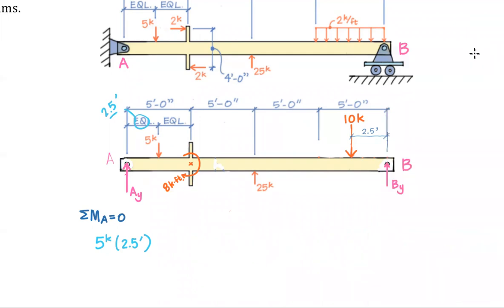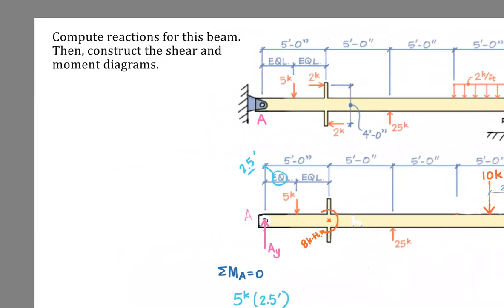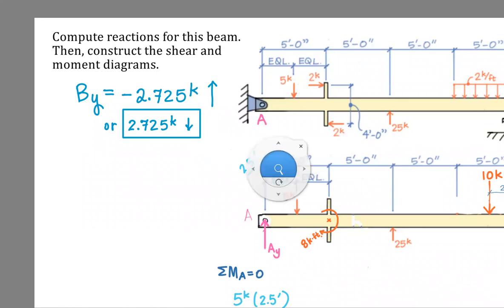And if I was doing this, I would then immediately go to my calculator and just type minus 5 times 2.5, minus 8, plus 25 times 10, minus 10 times 17.5. Multiply that times negative 1 to put it on the other side of the equation and then divide by 20. And we are going to get the following value for B sub Y. So B sub Y is equal to negative 2.725 kips. That was when we were assuming that that reaction was going upwards. And so to avoid any confusion or miscommunication, I would always, always, always rephrase this as or 2.725 kips down.